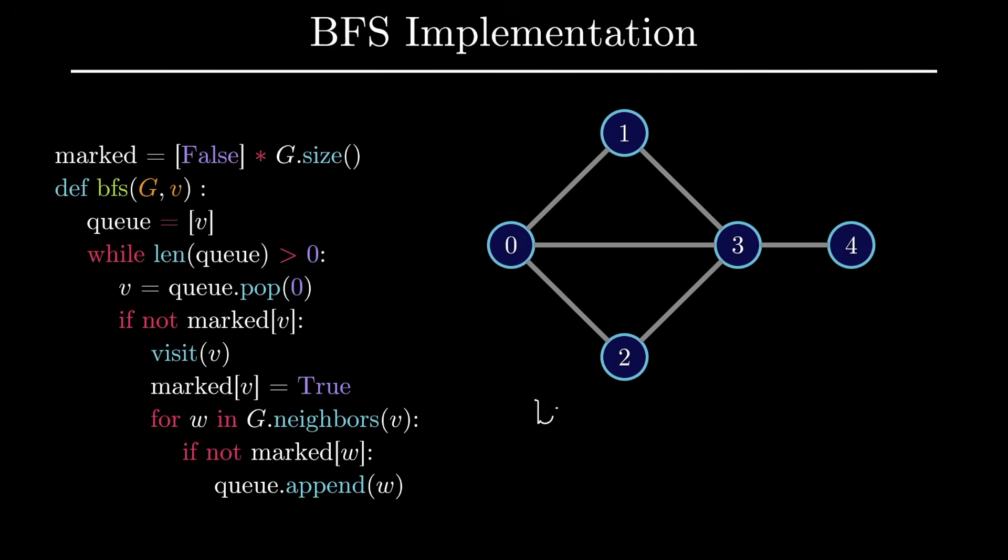To make sure this is clear, let's go through how the order is generated for this particular graph. Since we start at vertex 0, that's the first vertex into the queue which is then promptly removed, visited, and marked. This vertex is the first vertex in the BFS order.